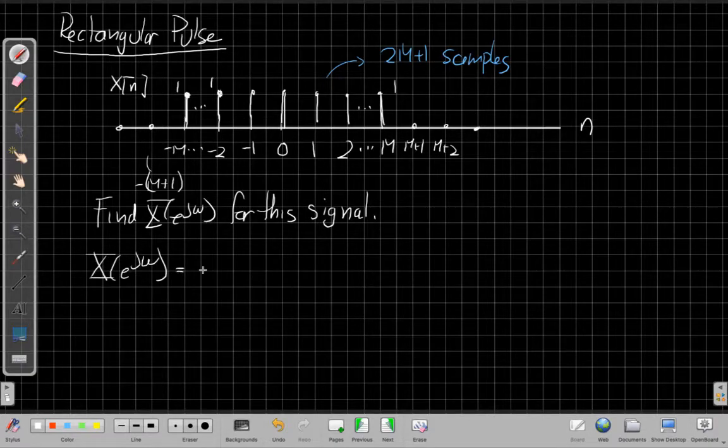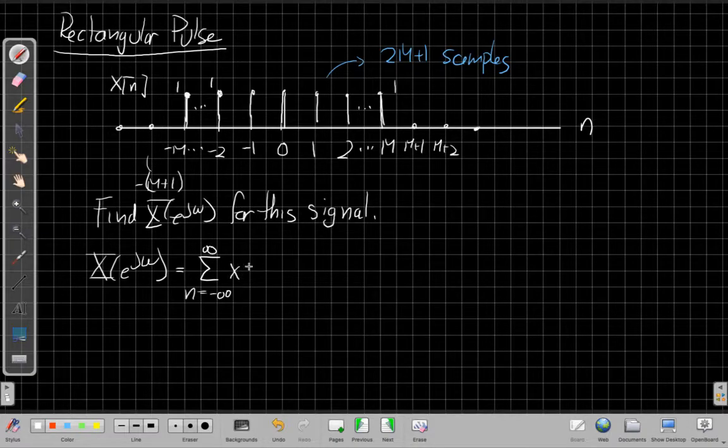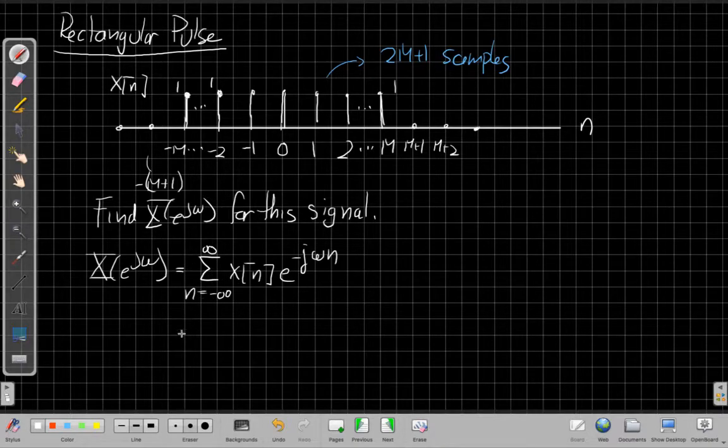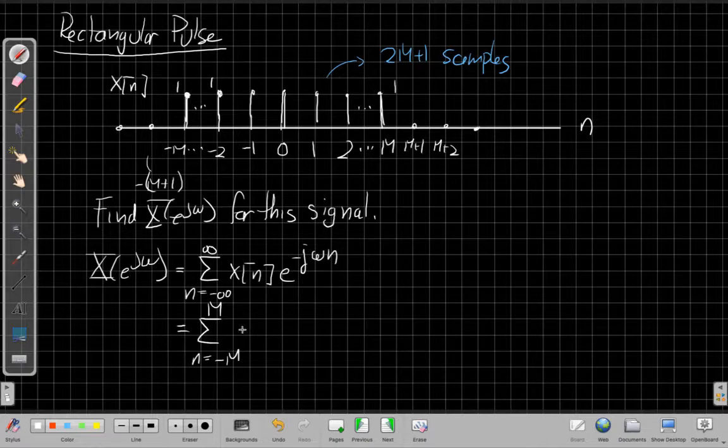We start in the usual place, which is directly from the sum that defines the discrete-time Fourier transform. And so it's X of n times e to the minus jωn. But then looking at this graph of the signal makes it very clear that many of the terms in this sum are 0. We only need to take the sum as n goes from minus M to plus M. And in that region, X of n would be 1, so I have 1 times e to the minus jωn.